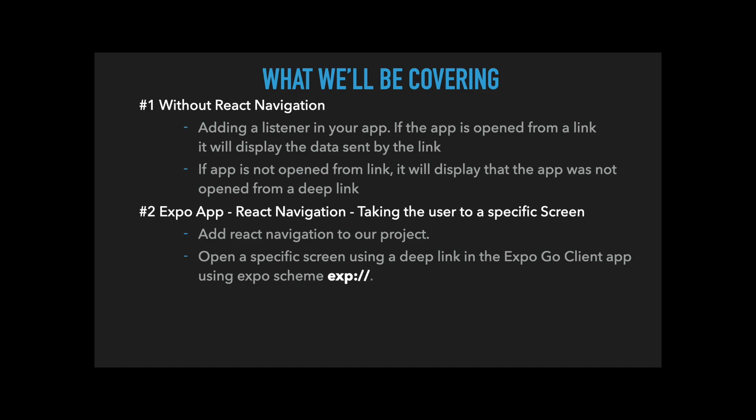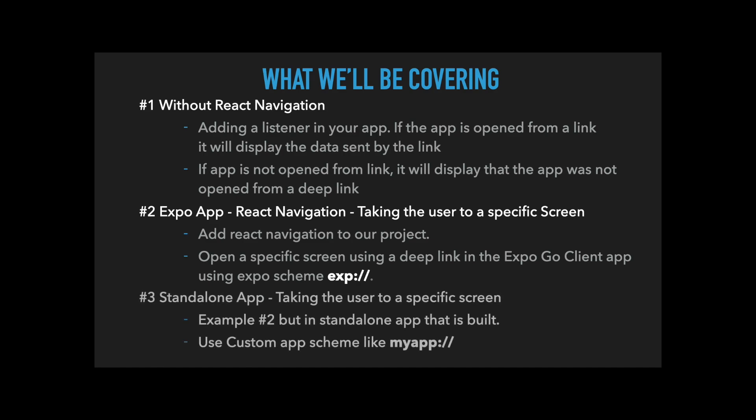Our last use case will be using a standalone app — we'll build out our Expo app to create a standalone app, install it on our iOS simulator, and test out our deep link using a custom URL scheme like 'myapp'. Along this process we'll notice how the linking module makes it extremely easy to open your app to a specific screen, whether the app was open previously or starting from a cold start.